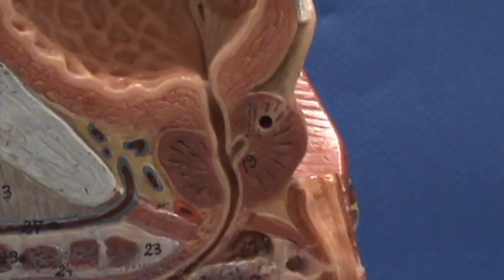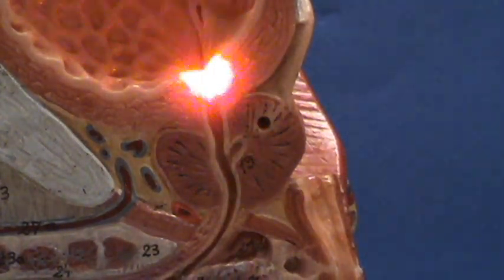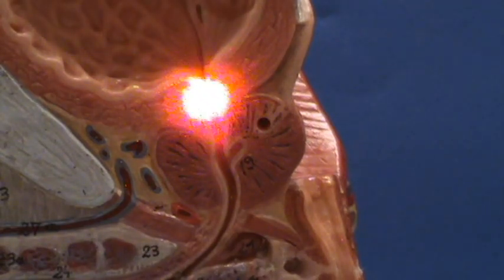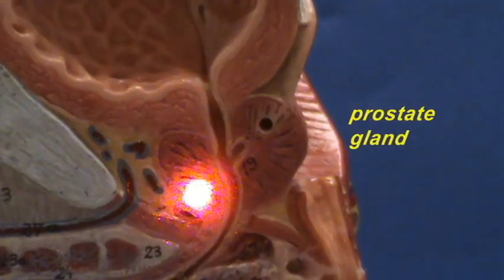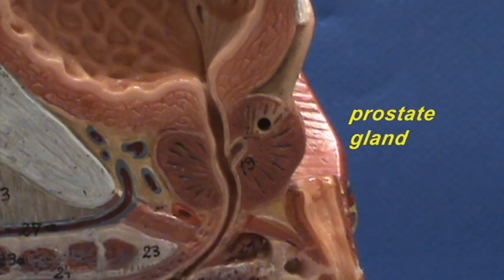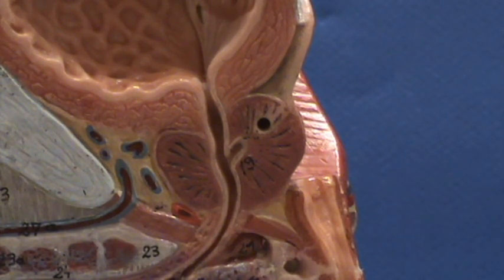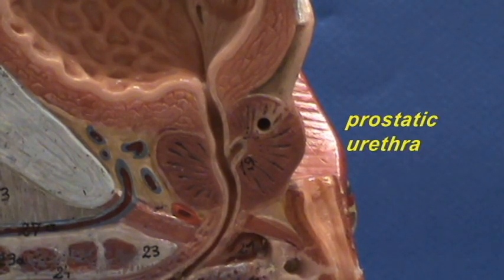Over here, you can see the urethra going through the wall of the bladder. Right over here is the prostate gland. This part of the urethra is going right through the prostate gland, so it is called the prostatic urethra.